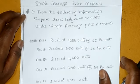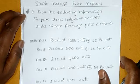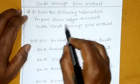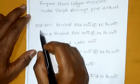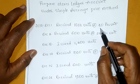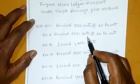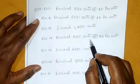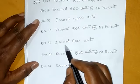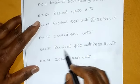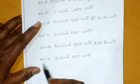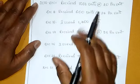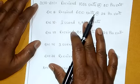Hi everyone. In this video, we will discuss a Simple Average Price Method problem. From the following information, prepare a Store Ledger Account under the Simple Average Price Method. 2010: December 1st - Received 1000 units at the rate of 20 per unit. December 4th - Received 600 units at the rate of 24 per unit. December 10th - Issued 1400 units. December 12th - Received 800 units at the rate of 28 per unit. December 15th - Issued 600 units. December 28th - Received 1000 units at the rate of 22 rupees per unit. December 31st - Issued 400 units.